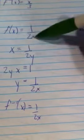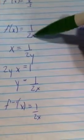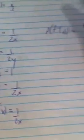So I'm going to plug my F inverse, 1 over 2x, in for the x's. So it's going to be 1 over 2 times 1 over 2x.